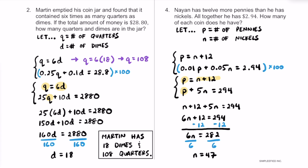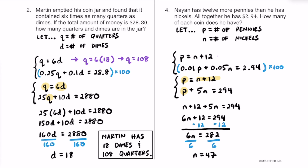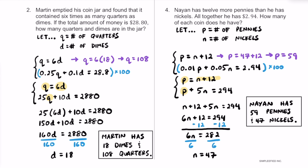So N equals 47 is the number of nickels. Substituting back into the original equation: P equals 47 plus 12, so P equals 59. In summary, 9 has 59 pennies and 47 nickels.